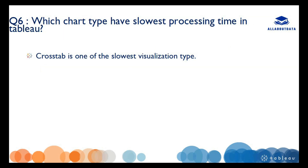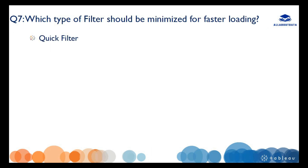The next question is: which chart type has the slowest processing time in Tableau? Cross tab is one of the slowest visualization types, followed by map charts. And which type of filter should be minimized for faster loading? Quick filters should be minimized for faster loading. That's it for this video. Thank you so much guys — if you like the video, please like, share, and subscribe, and stay tuned for upcoming videos.